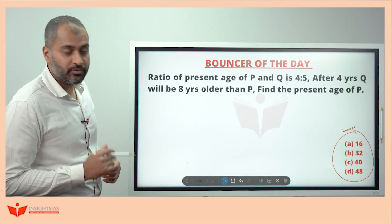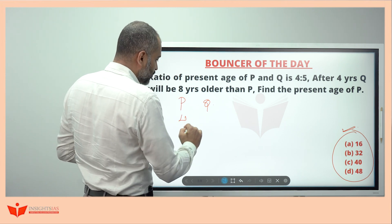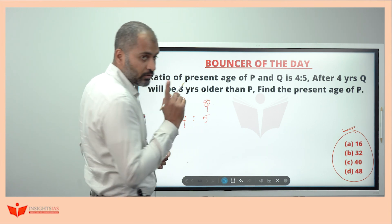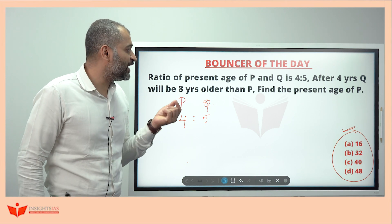Ratio of present age of P and Q is 4 is to 5. P and Q, two people are there. Their ratio of their ages is 4 is to 5. After 4 years, Q will be 8 years older than P.